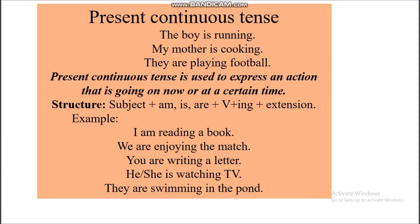Present continuous tense. Present continuous tense is used to express an action that is going on now, or at a certain time. Structure: Subject plus am, is, or are, plus verb ing form, plus extension. For example: I am reading a book. We are enjoying the match. You are writing a letter. He or she is watching TV. They are swimming in the boat.